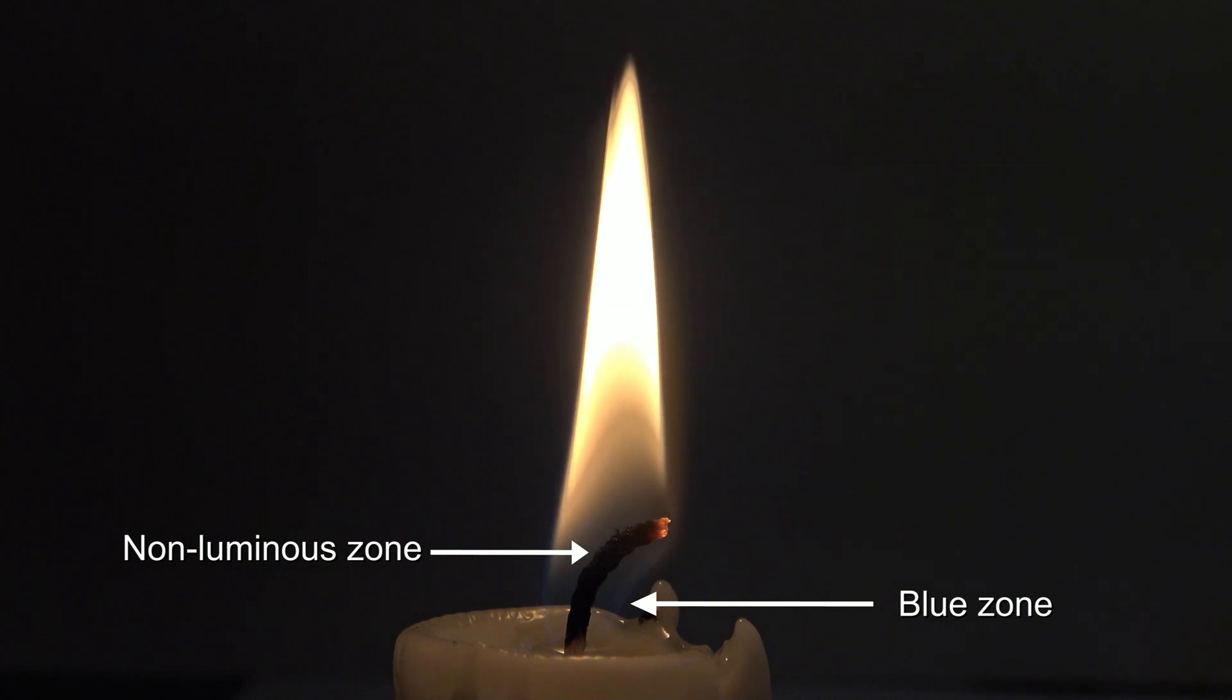Above the wick is the dark zone. This part gets only low amounts of oxygen from the air, so combustion is very low, making this part look dark. Still, the molecules begin to split and form shorter and longer chains, as well as soot particles made of carbon.